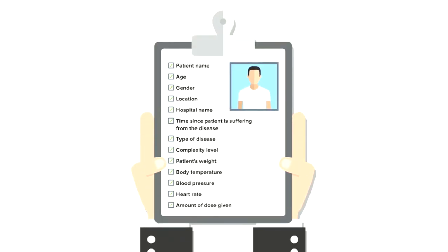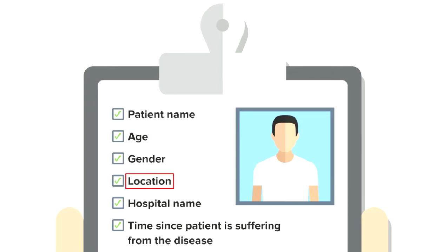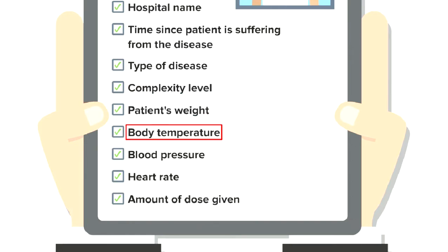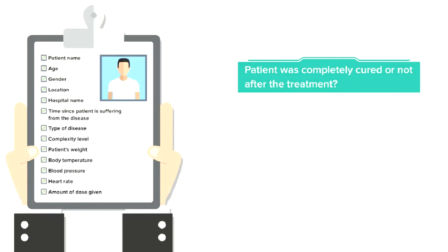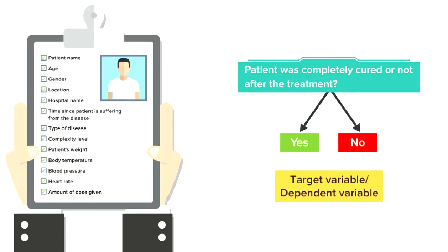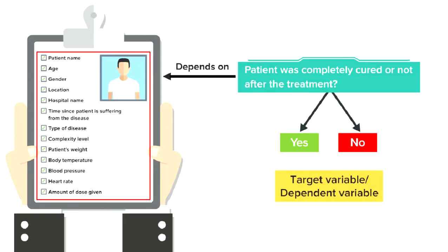Suppose we have the results of patients who are suffering from a particular disease and receiving treatment for it. The data may contain information like patient's name, age, gender, location, hospital name, time since patient is suffering from the disease, type of disease, its complexity level, patient's weight, body temperature, blood pressure, heart rate, and the amount of dose given, etc. Additionally, we also have information whether the patient was completely cured or not after the treatment. This additional information can be represented as a category variable containing yes or no against each patient depending on whether he or she was cured after the treatment or not.